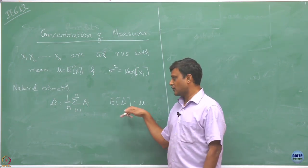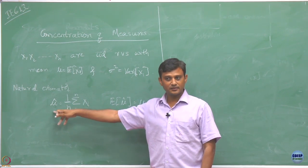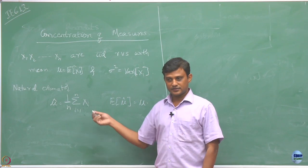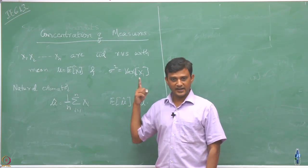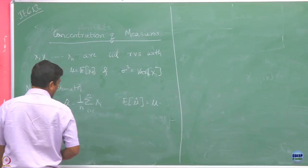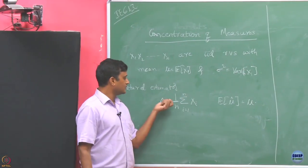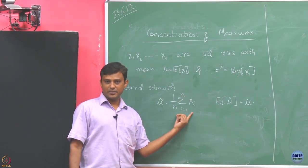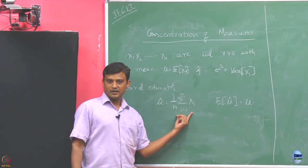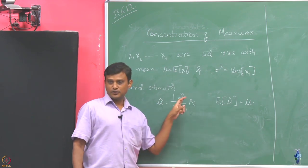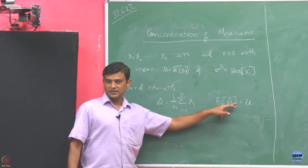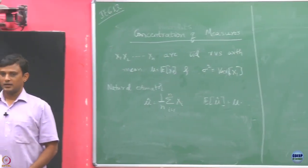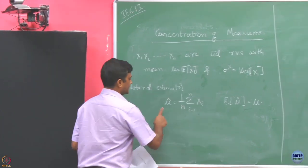When the expectation of μ̂ equals μ, we call this an unbiased estimator — we have already talked about this in the adversarial case as well. This holds for any n: even with one sample, two samples, or three samples, the estimator remains unbiased.